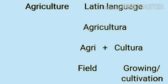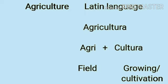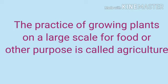What is Agriculture? The word agriculture is derived from the Latin language word 'Agricultura'. 'Agri' means field and 'cultura' means growing or cultivation. The practice of growing plants on a large scale for food or other purposes is called Agriculture.